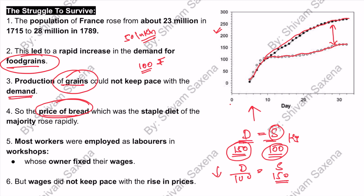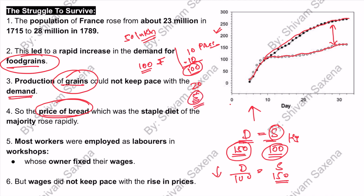For example, if a worker's monthly income is 100 rupees and one bread costs 10 rupees, he can buy 10 pieces of bread. But if the price of bread increases to 20 rupees — because demand is more than supply — he can now only afford 5 pieces. Could he survive the whole month on 5 breads when he needed 10? The answer is no. Workers could not afford enough because prices kept increasing.